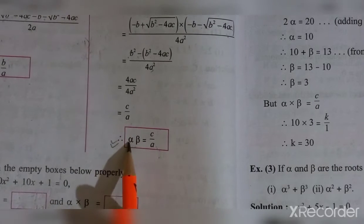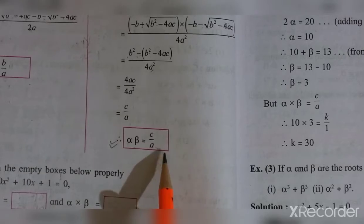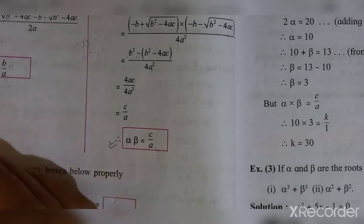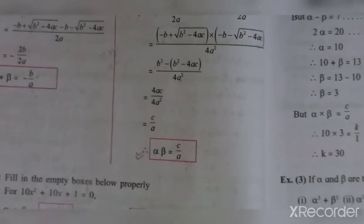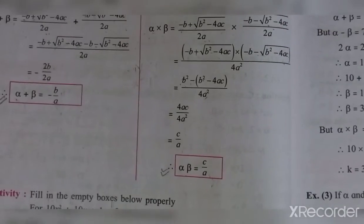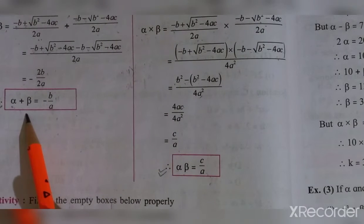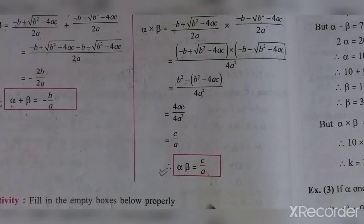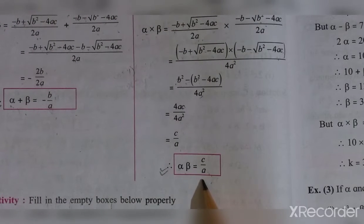So alpha multiplied by beta is equal to c upon a. These two results are very important: the addition of roots of the given quadratic equation is minus b upon a, and the multiplication of roots of the given quadratic equation is c upon a.